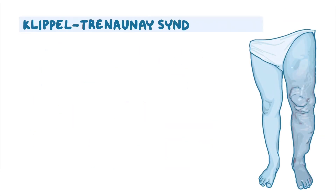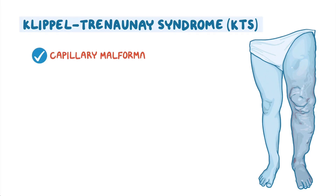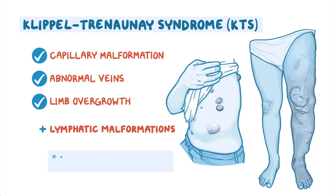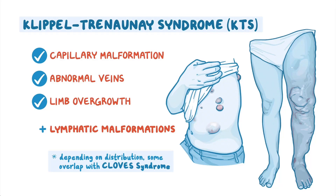Klippel-Trenaunay syndrome, or KTS, includes capillary malformation, abnormal veins, and limb overgrowth. People with KTS often have lymphatic malformations as well, so depending on the distribution, may have some overlap with CLOVES syndrome.